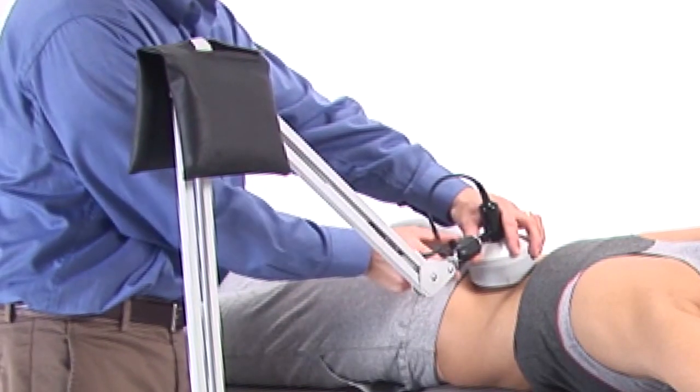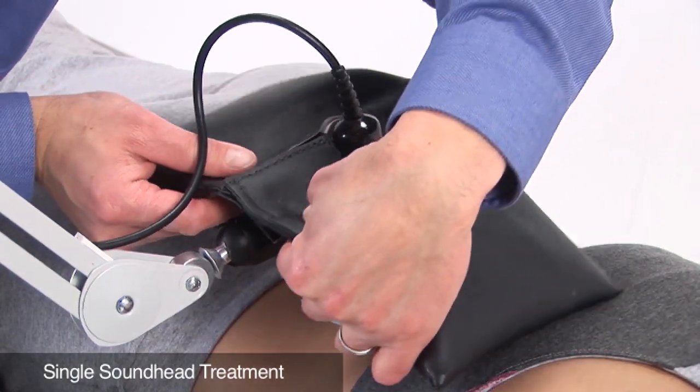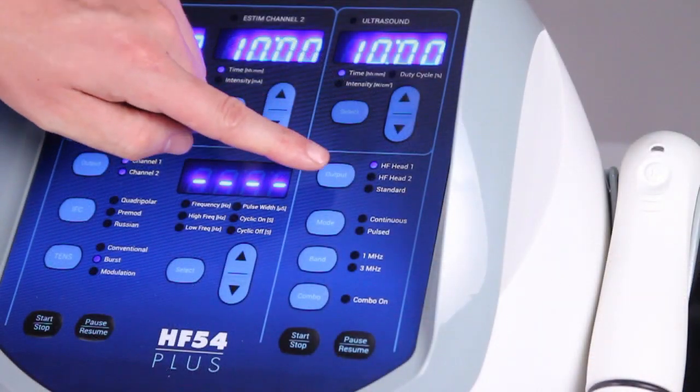The weight bag is used to improve contact to your patient. It can be placed on either the ultrasound arm or attached directly around the sound head.